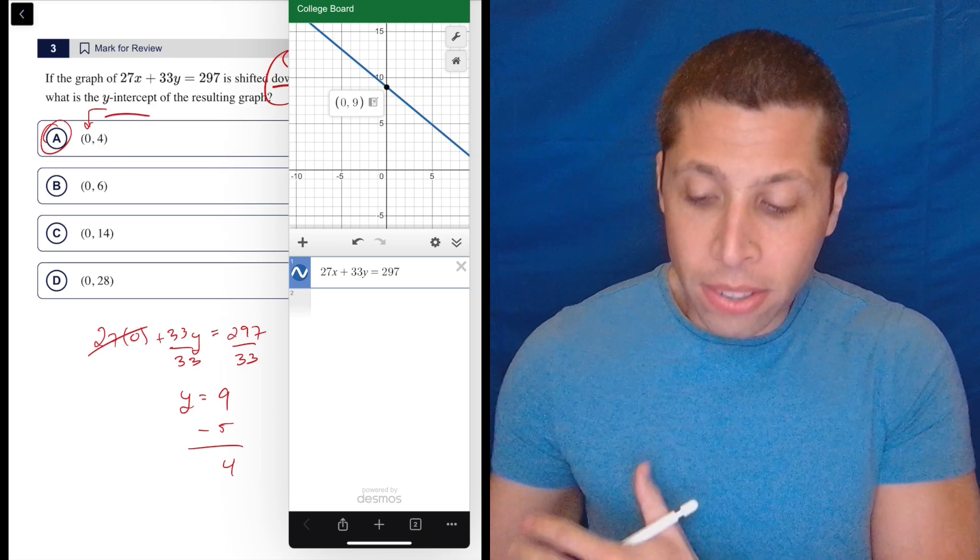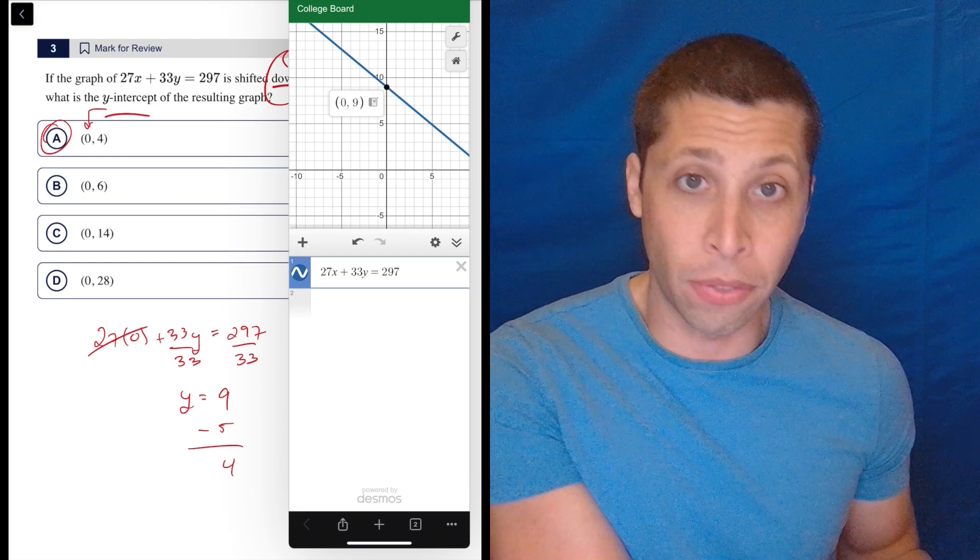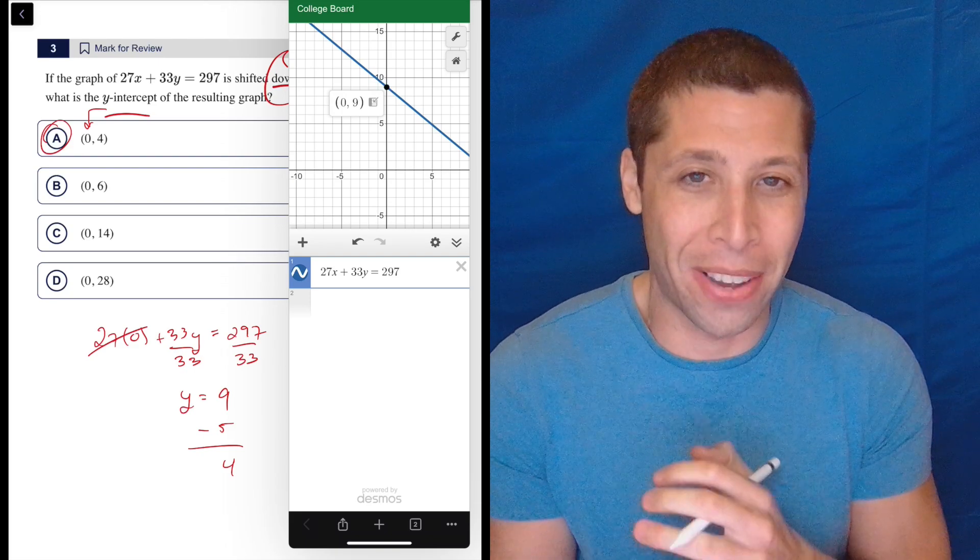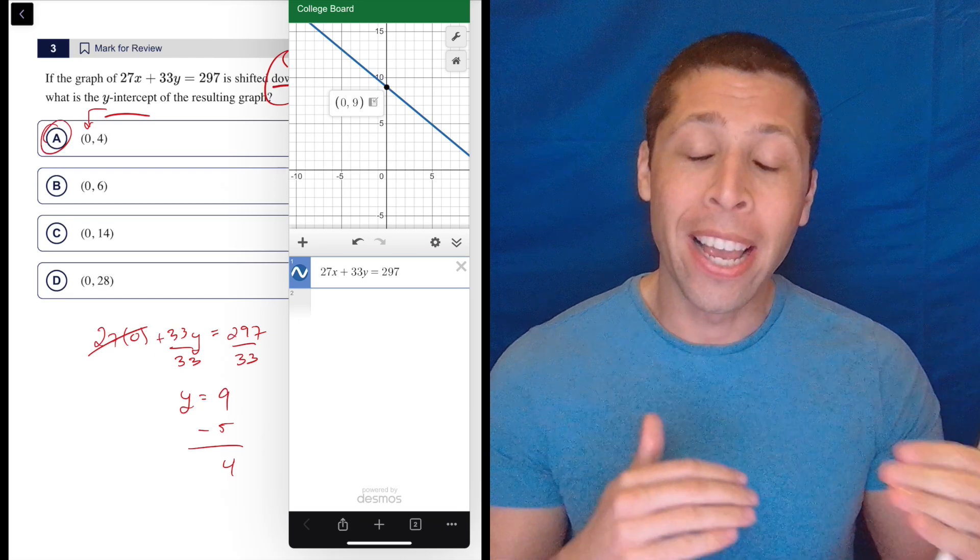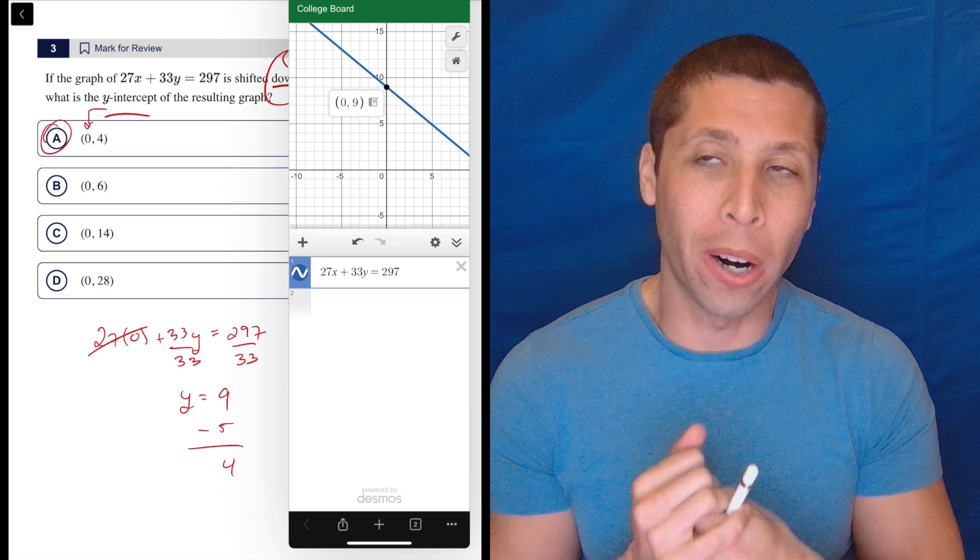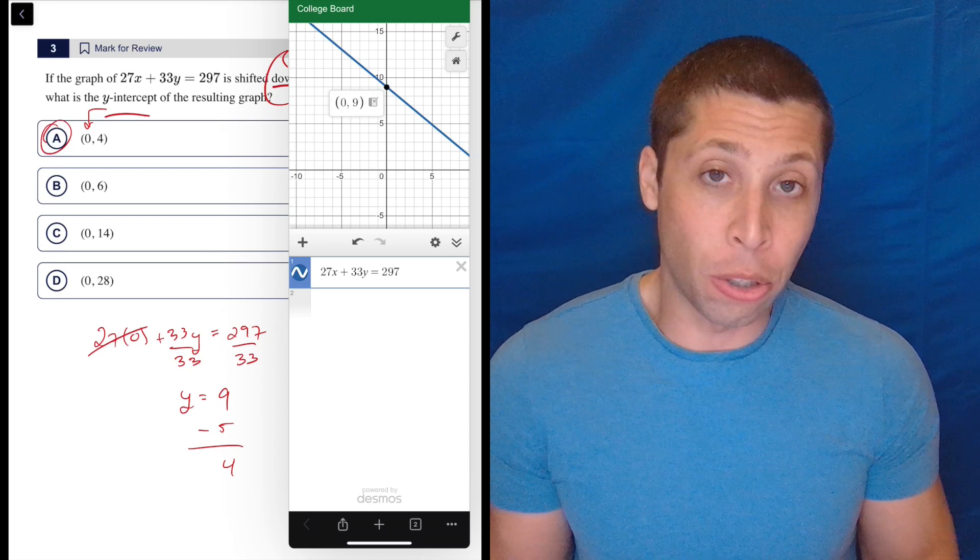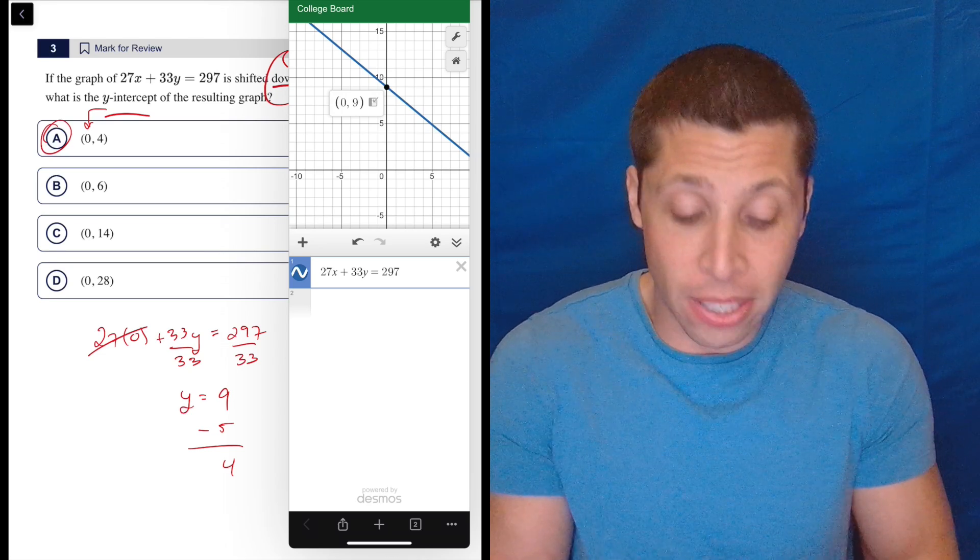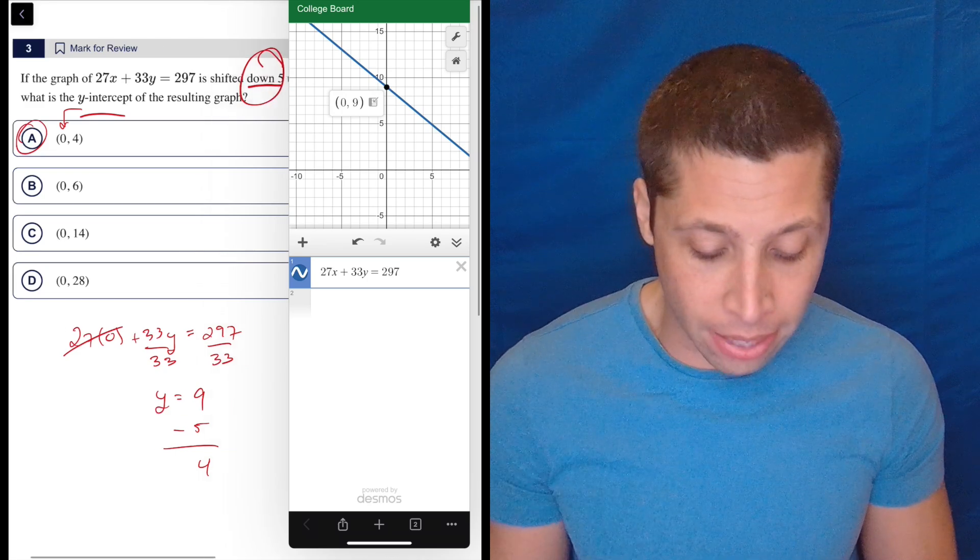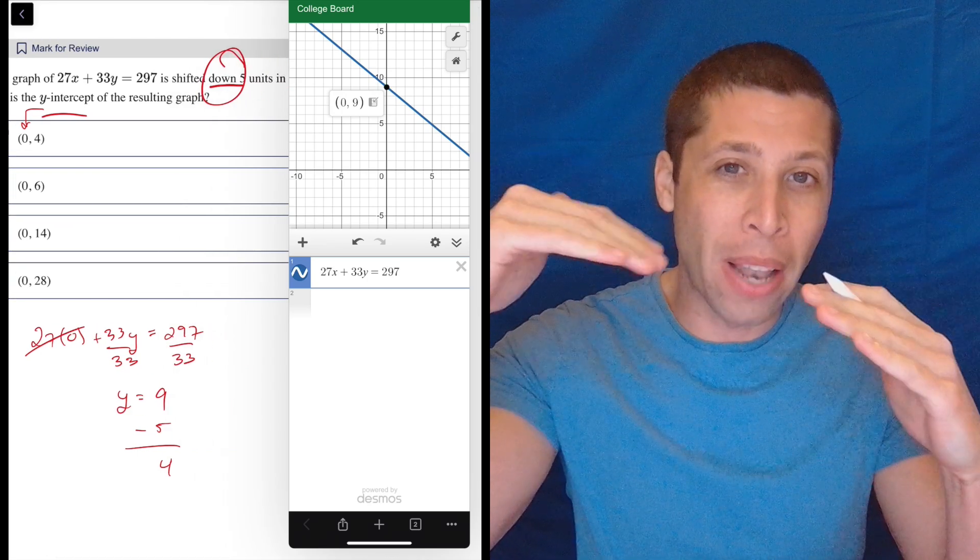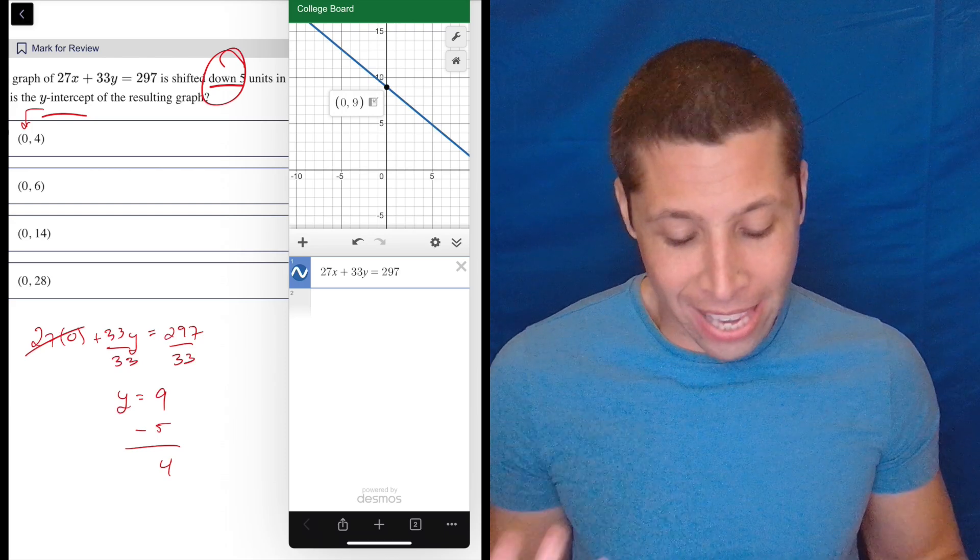Because this isn't written in y equals mx plus b, it's a lot harder to show the shift by graphing it because we really need it to be in y equals format in order for that plus minus thing to work on the entire equation the way we would want. So the most you would really do here is just look at it, be able to see definitively that the y-intercept is 9 and then shift it down 5 units. Visually you can see that going down 5 from 9 is 4.